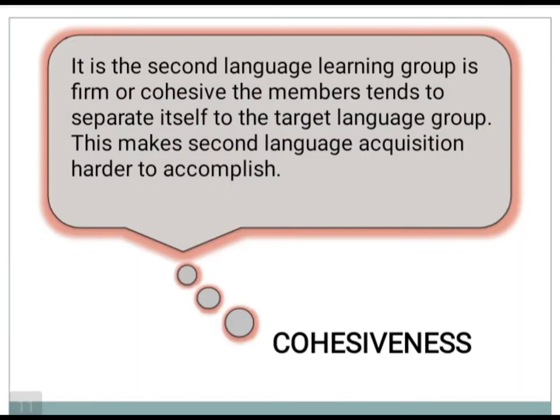The fourth factor is cohesiveness. If the second language learning group is firm or cohesive, members tend to separate themselves from the target language group, making second language acquisition harder. Cohesiveness is important because a group's ability to work well together depends on its cohesion, and group cohesion helps members resolve conflicts and preserve group relationships.